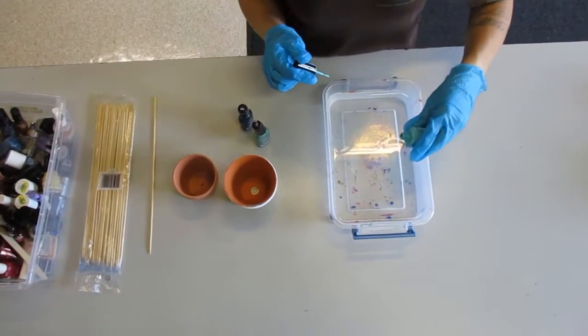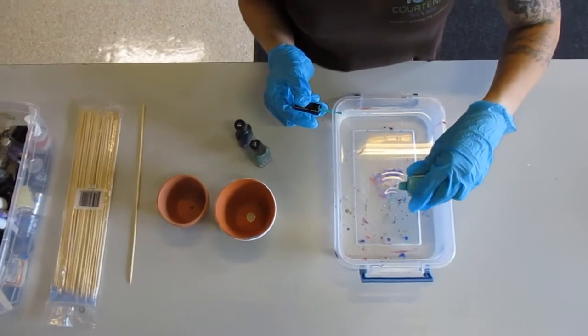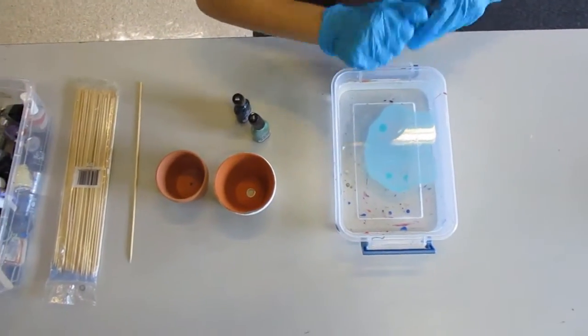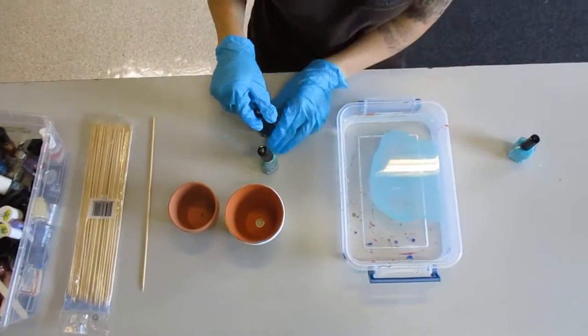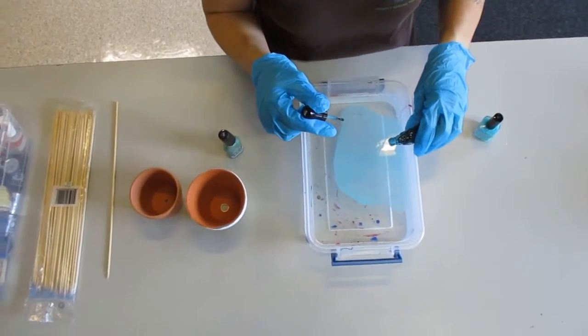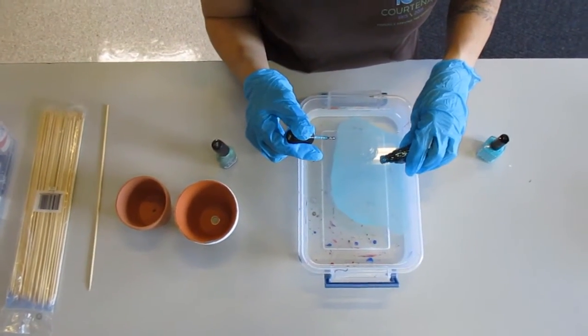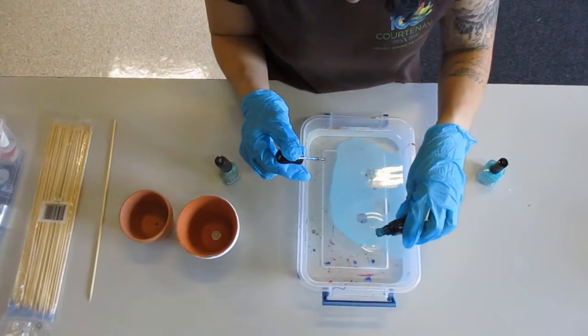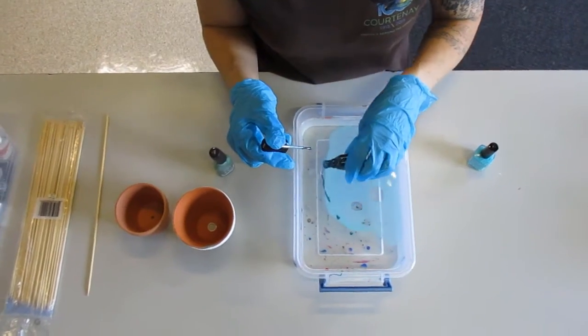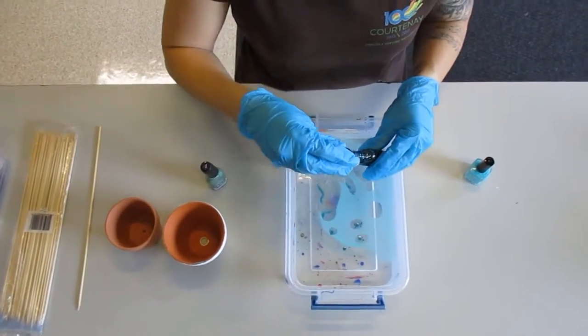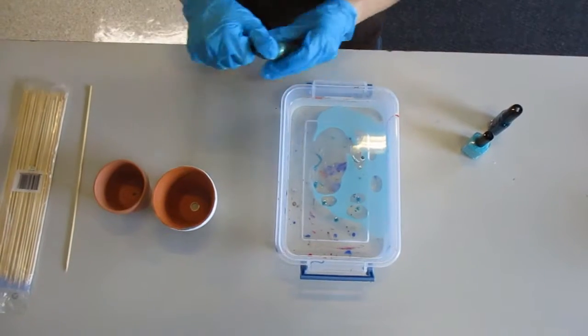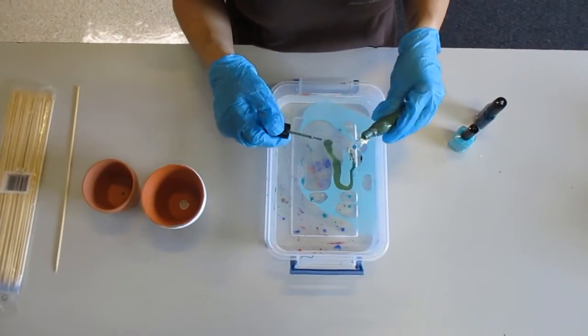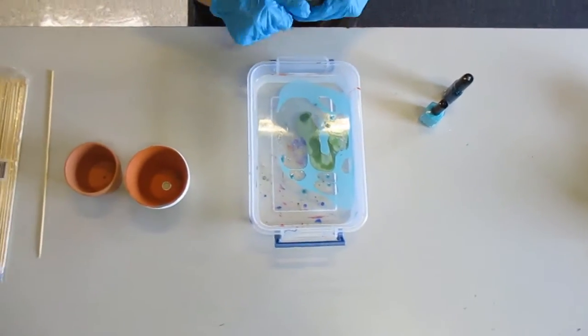Alright, so the first thing I'm going to do is I'm just gonna start dropping a little bit of color into my bin here. So you can try and drop it however you'd like. You can drop it kind of within each other like I'm doing. You can make lines and I usually just do it at random because it's pretty fun.